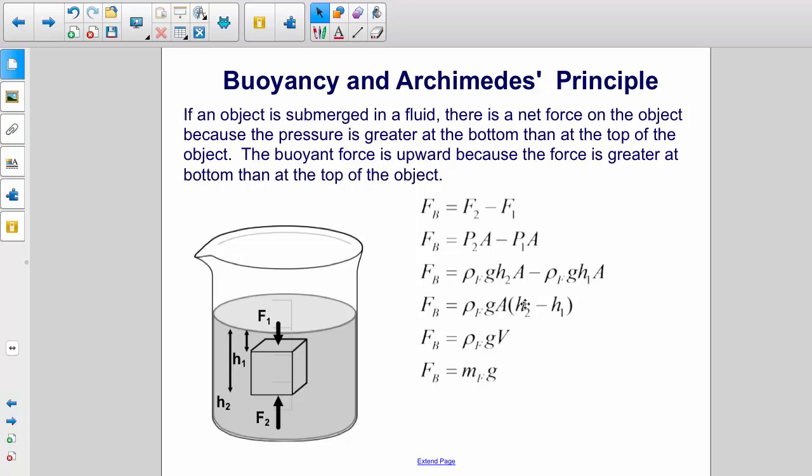Well, if we look at that and multiply it by A, we realize that that is just the volume of this object, so we have rho GV.